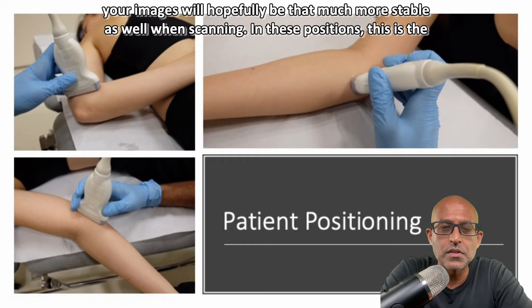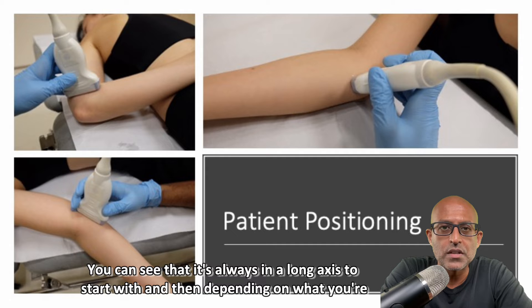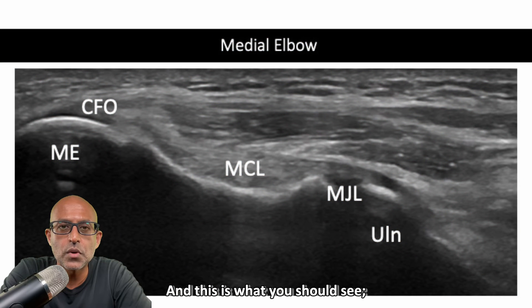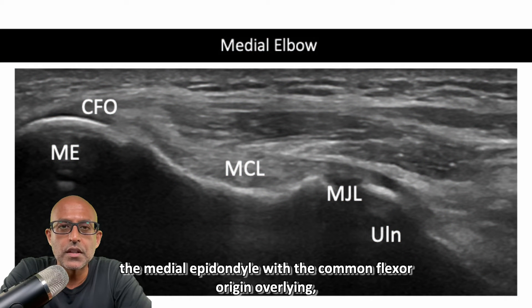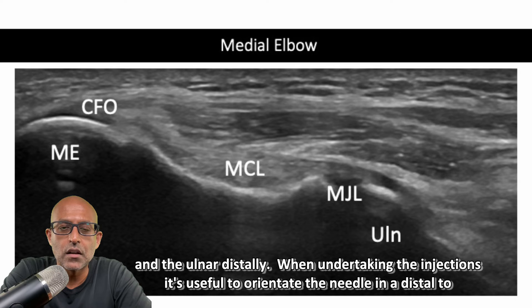When scanning in these positions, this is the orientation of your transducer. You can see that it's always in a long axis to start with, and then depending on what you're scanning for, you may adjust it accordingly. And this is what you should see: the medial epicondyle with the common flexor origin overlying, the medial joint line with the medial collateral ligament overlying, and the ulna distally.